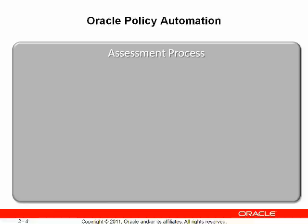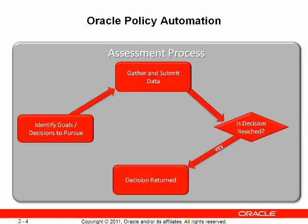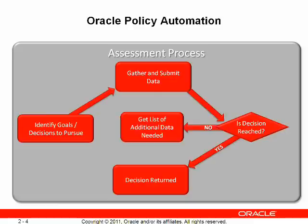Oracle Policy Automation is either used through an assessment process or an interview cycle. The OPA assessment process uses a deployed policy model to make a determination or decision using data provided by an application. It's important to know that OPA requires no database connection. OPA efficiently evaluates the provided data through all the natural language policies defined in a model to work out what conclusions can be reached. When a goal is assessed, there are only two possible outcomes: either a decision is reached using the provided data, including an optional report of how the policies were used to reach that conclusion, or insufficient data has been provided. In this case, OPA provides a list of the additional data that will lead to a definitive decision for the goal.